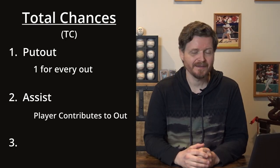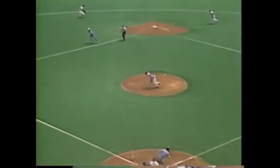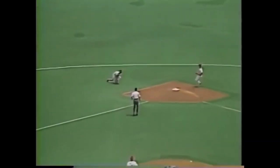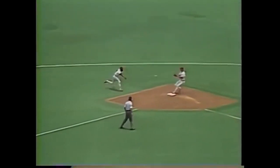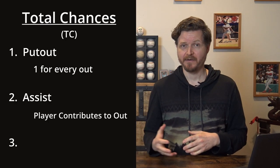A double play is another example: a shortstop fields a ground ball and throws to second base for the first out, then the ball goes to first base for the second out. In this case the shortstop gets an assist, the second baseman gets a put out and an assist, and the first baseman gets a put out.